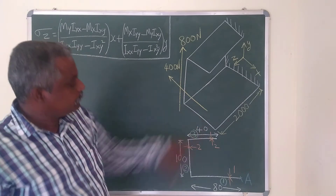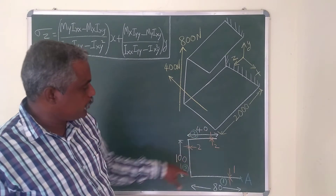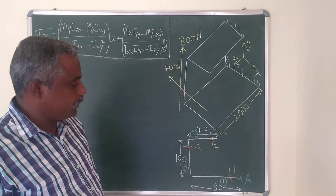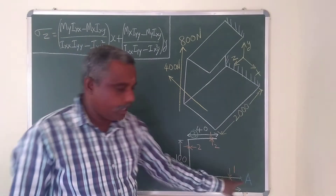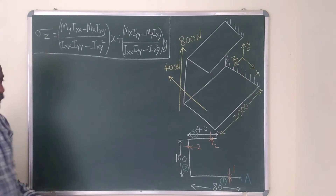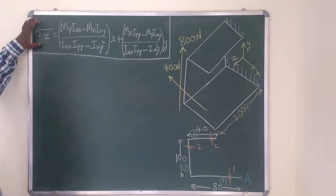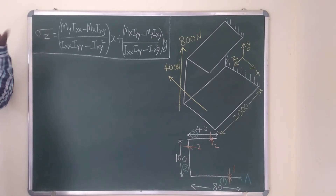The cross-sectional dimensions are shown here — thickness 2mm, 2mm here, and 1mm. It is required to calculate the direct stress due to bending at point A. This is our expression for direct stress due to bending, and with the help of this expression we are going to find out the magnitude of the direct stress due to bending.